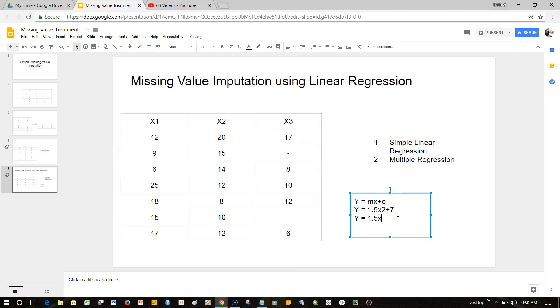Once we have this equation, in this case it will be, let's say, X2. What we will do is we will say y equals 1.5 multiply with 15 in this case, plus 7. Once we have substituted 15, our calculation will come to 22.5.